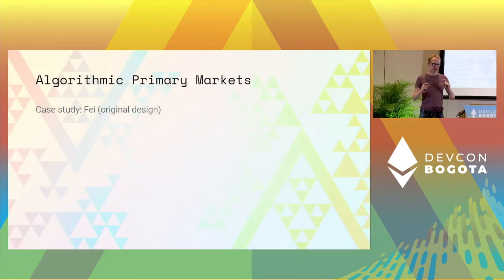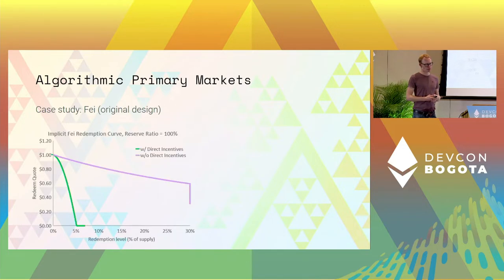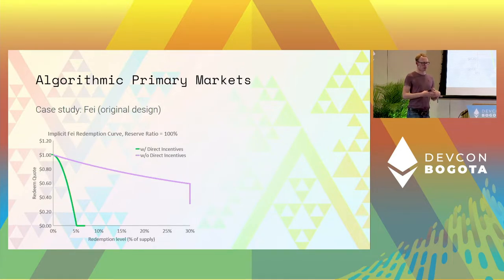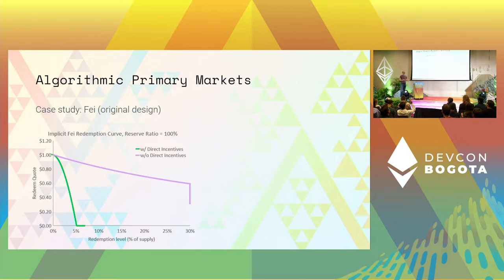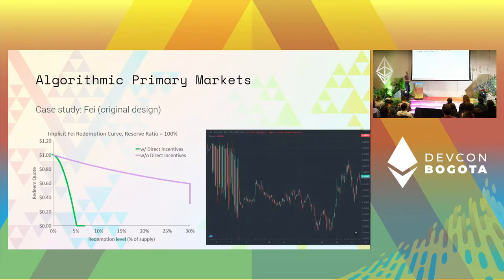I want to look at one design case study, which is FEI — the original design of FEI, which was also not very successful in its original form. FEI had these direct incentives, which basically means the more off-peg the whole system is, the worse the price you're getting. This leads to a redemption curve that is very steep, which means your peg is not going to be stabilized very long. Then they removed the direct incentives, and their redemption curve looked much, much less steep. We can see the effect of this steep redemption curve: the price of FEI after launch had a huge price drop with a lot of volatility.